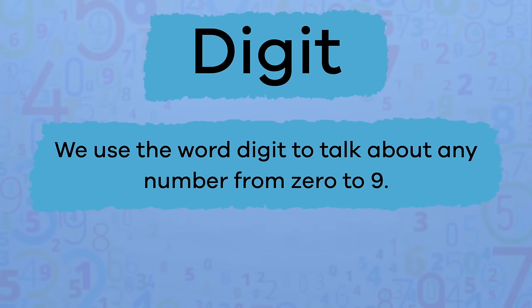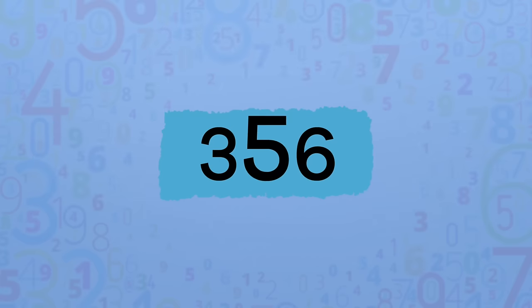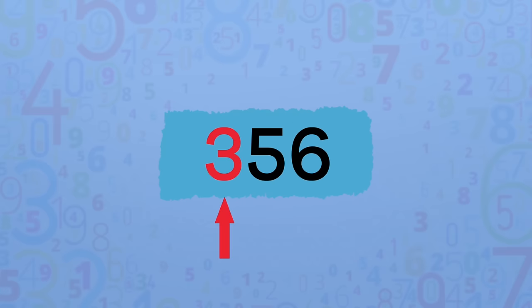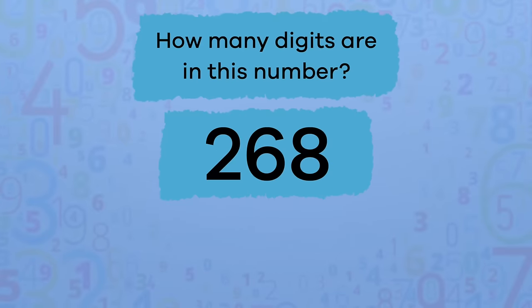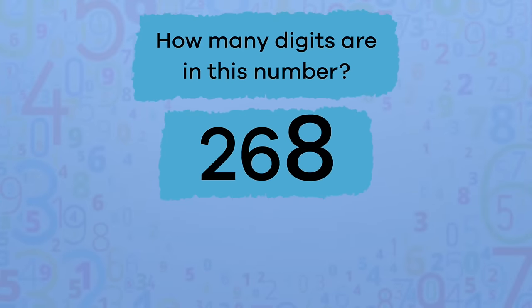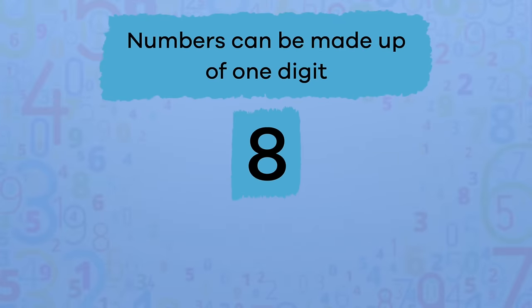In the number 356, there are three digits: one, two, three. How many digits are in this number? It's three again, isn't it? One, two, three.